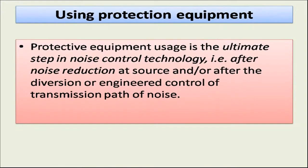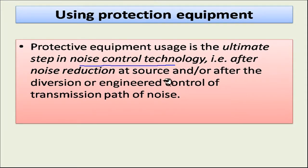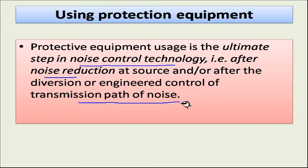Protective equipment usage is the ultimate step in noise control technology, because some machinery — like a hammer producing steel-to-steel impact — will still produce noise regardless of other measures. After noise reduction at source and engineering control of the transmission path, if noise still remains, the only option is to use protective equipment for protecting your ears.